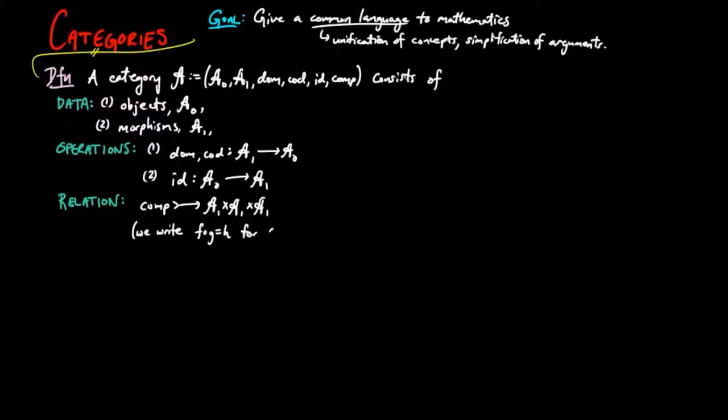We write FG is equal to H for comp GFH, and we represent this situation in diagram form as a directed graph where the arrows are the morphisms.